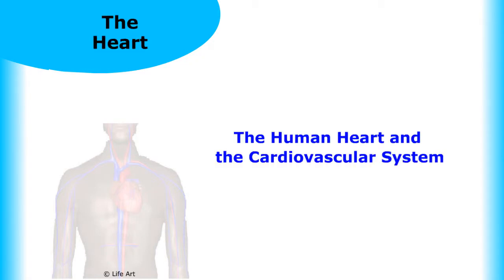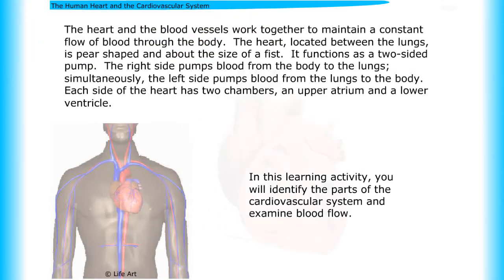The human heart and the cardiovascular system. The heart and the blood vessels work together to maintain a constant flow of blood through the body. The heart, located between the lungs, is pear-shaped and about the size of a fist. It functions as a two-sided pump.